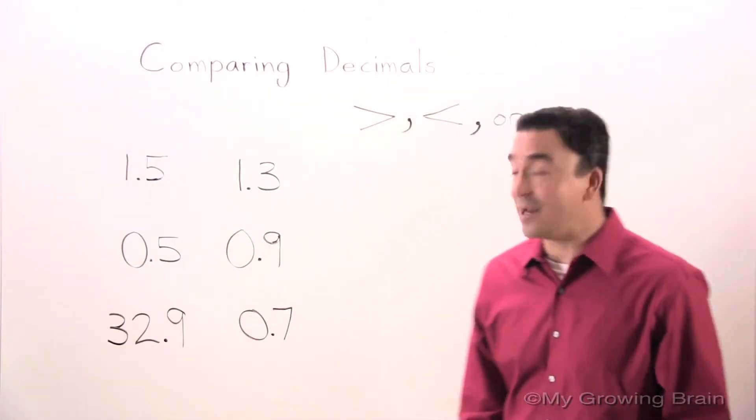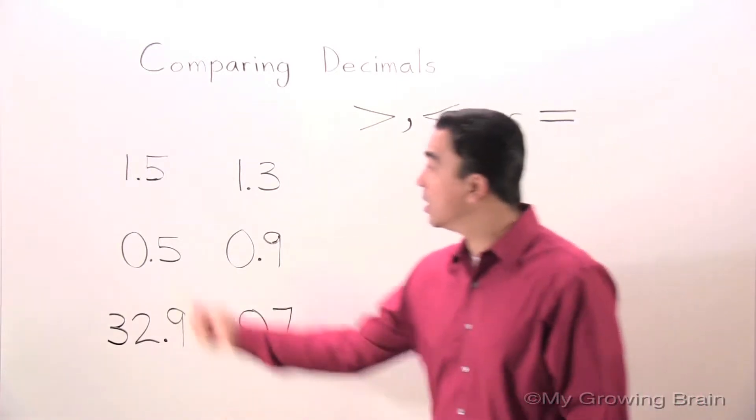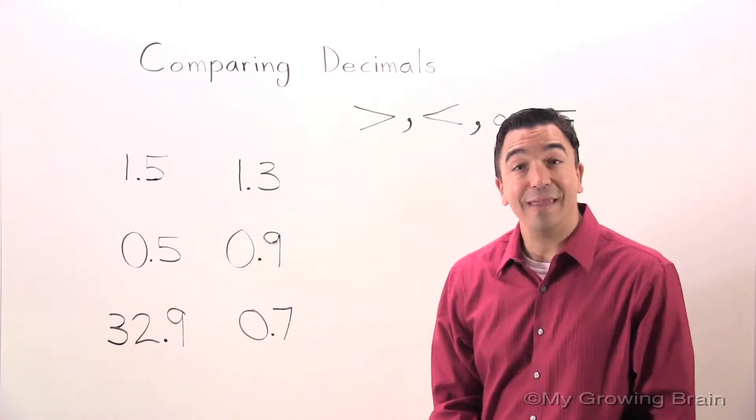Alright, we're ready to go. We have three problems. We're going to start with the first one. 1.5, 1.3, or 1 and 5 tenths, 1 and 3 tenths.